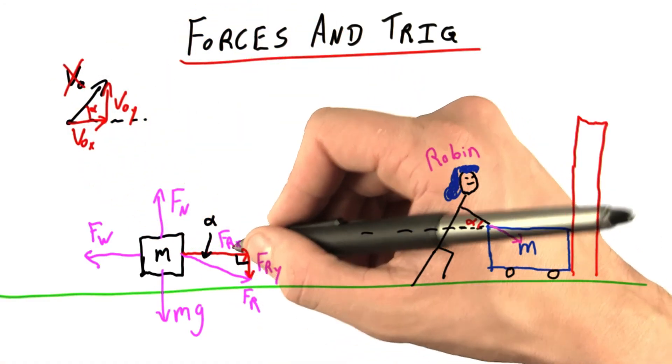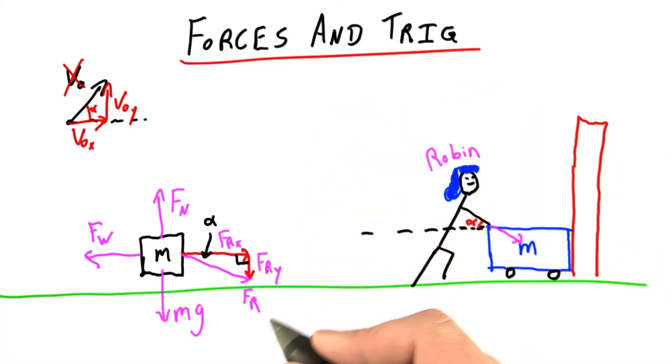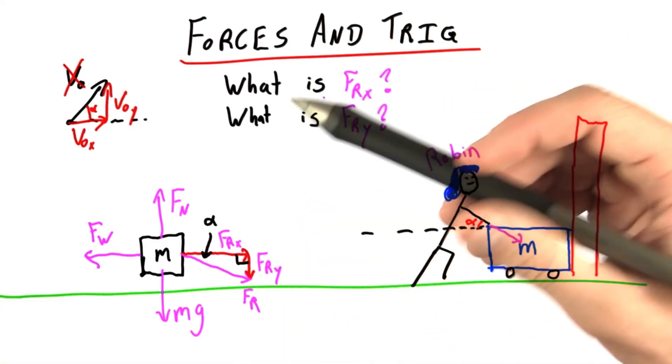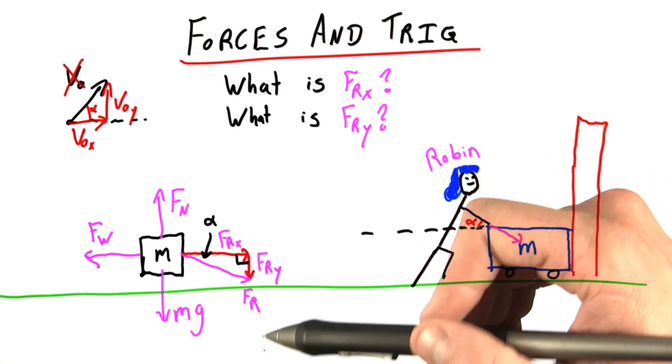Likewise, we're now using the x and y components of Robin's pushing, and we're not going to think about this too much anymore. But we still have to answer the question, what are these values for the x and y components of Robin's pushing?